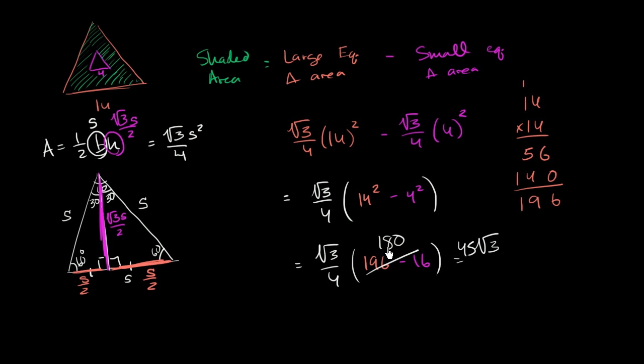Did I do that right? 180 divided by 4 times 45 is 160 plus 20 is exactly 180. So it's 45 square roots of 3. And if I wanted to get an approximate answer as a decimal...